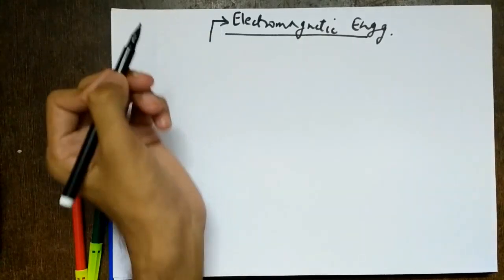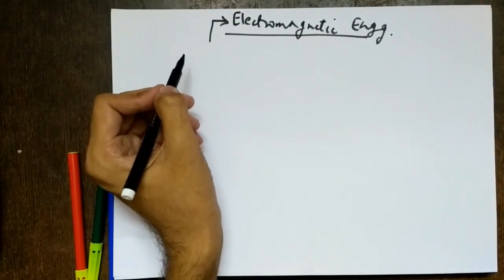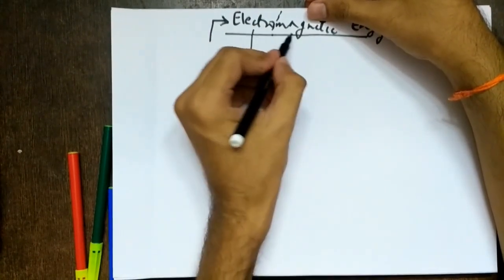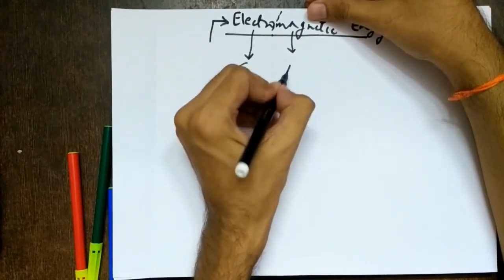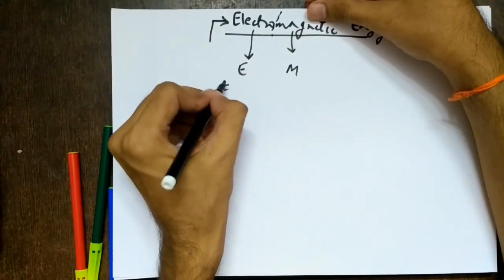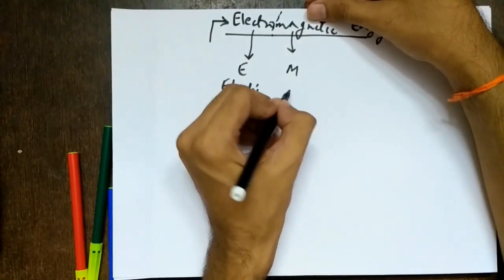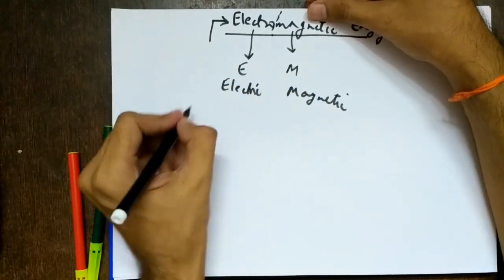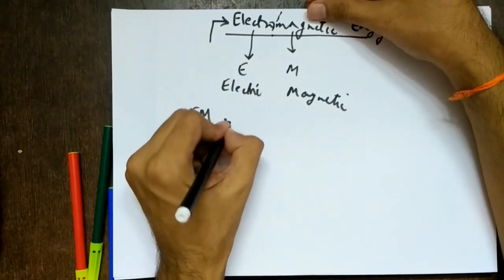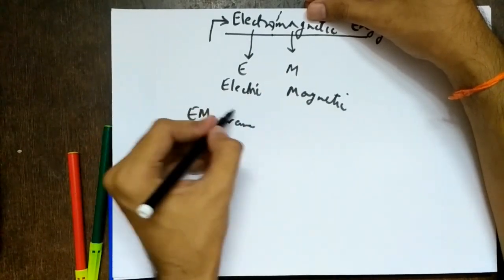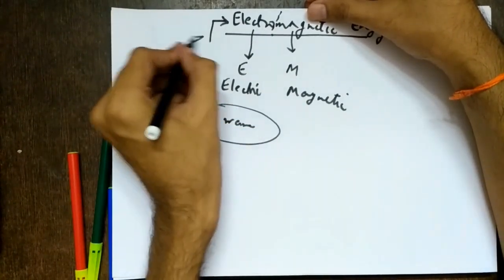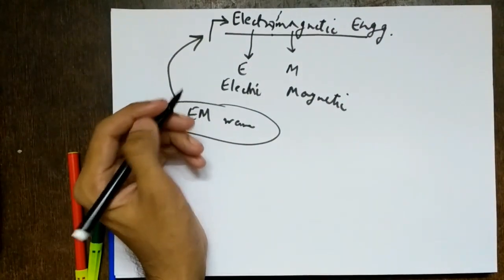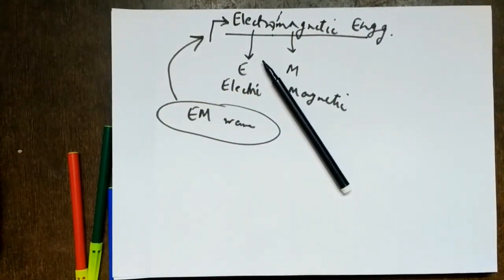The subject can be divided into two parts: electro and magnetic — E and M. E is concerned with electric nature and M is concerned with magnetic nature. You might have heard of something called an EM wave or electromagnetic wave — from this we get the subject called electromagnetic engineering. I call this the mother of all subjects, and there is a very simple and peculiar reason behind it.